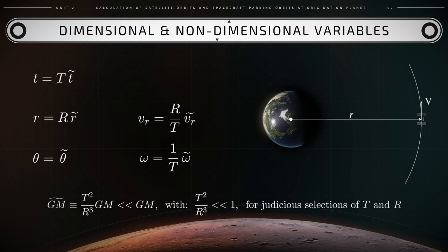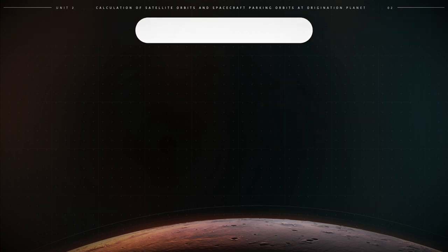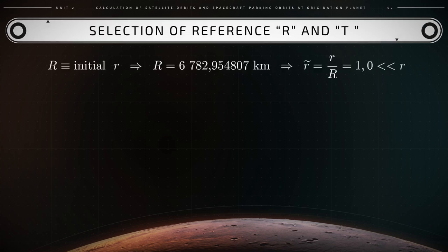GM̃, the non-dimensional version, can be made much smaller than the dimensional GM through a judicious selection of the reference time T and the reference length R, so that T squared over R cubed is much smaller than 1. The reference length R is set equal to the initial condition for the dimensional r. In this case, R equals exactly 6,782.95 km. As a consequence, r̃ equals the dimensional r over the reference R, which gives us 1 — so much smaller than 6,000 km.